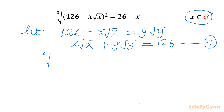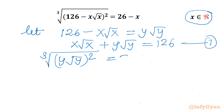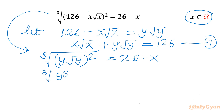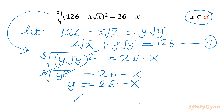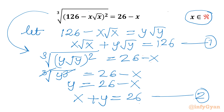Now I will write our original equation. So it would be (y√y)² = 26 minus x. I can write cube root of y²·y = y³, so cube root and cube cancel: y = 26 minus x, or x + y = 26. Let us call this equation 2.